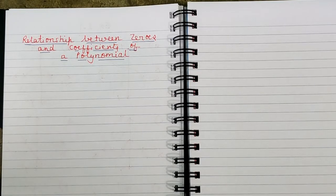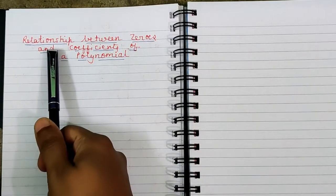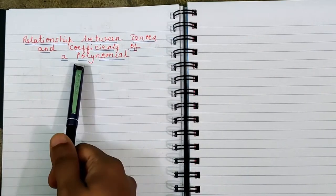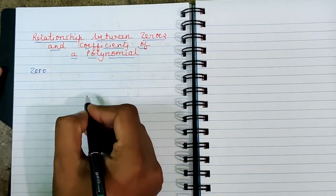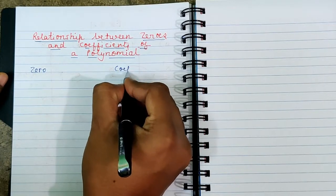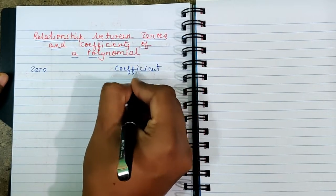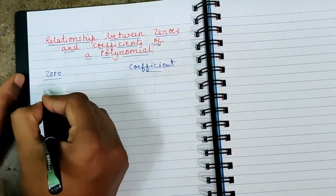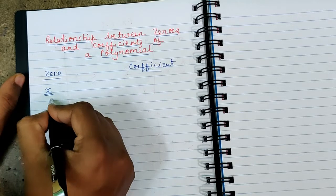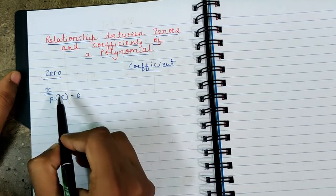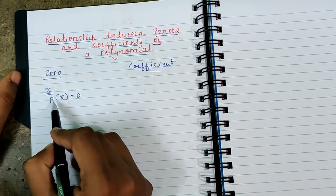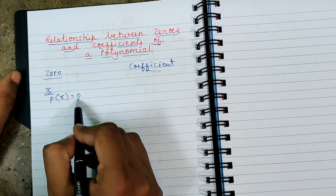Hello and welcome back, students. Let us continue with the next topic of this chapter: polynomials. Today we are going to see a very important topic — the relationship between zeros and coefficients of a polynomial. Before we move ahead, let us have a quick revision. What is the zero of a polynomial? It is that value of x at which the entire polynomial p(x) becomes zero.